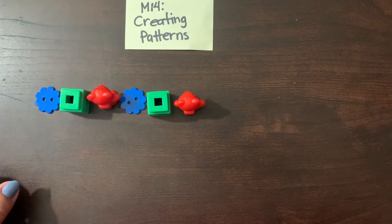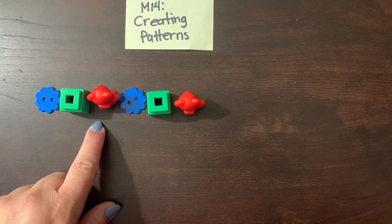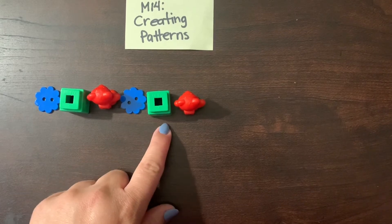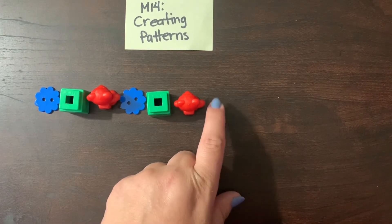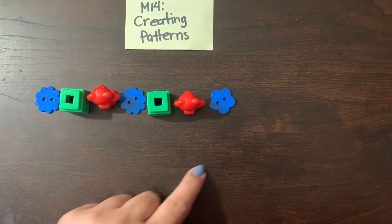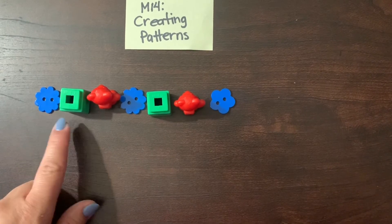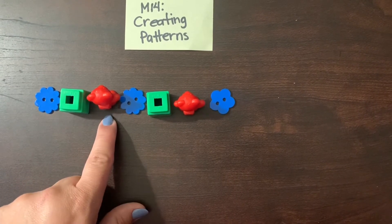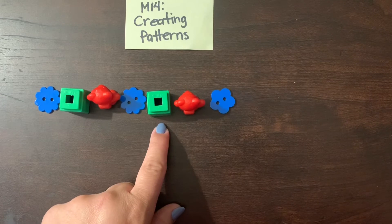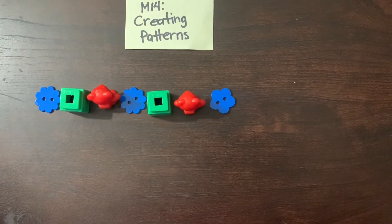What do you think comes next? You have a button, a cube, a bear. A button, a cube, a bear. What do you think comes next? Right, a button. What do you think comes after the button? Let's say our pattern again. Button, cube, bear. Button, cube, bear. Button, cube.